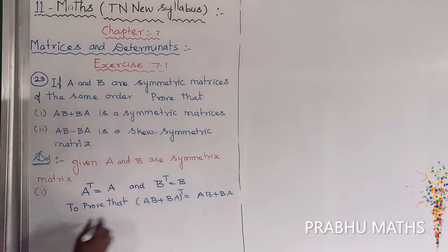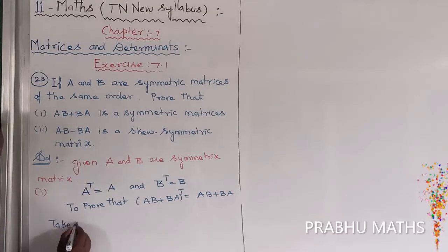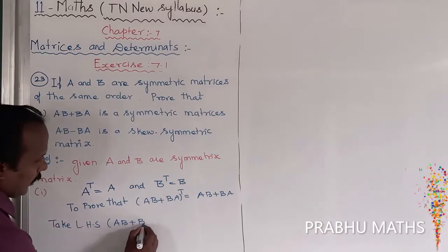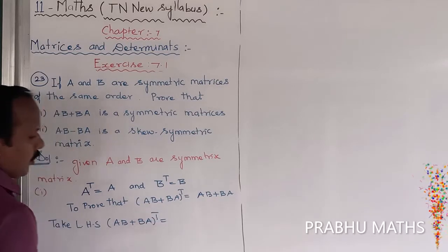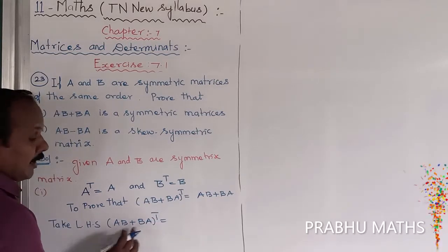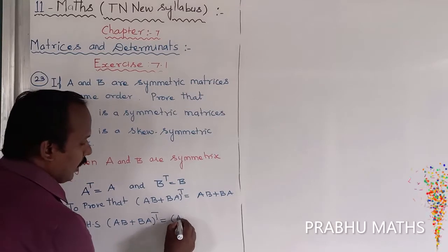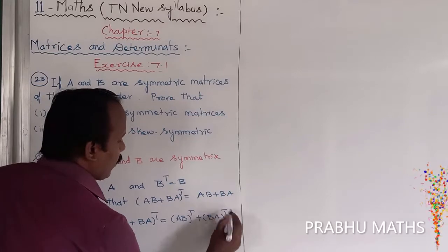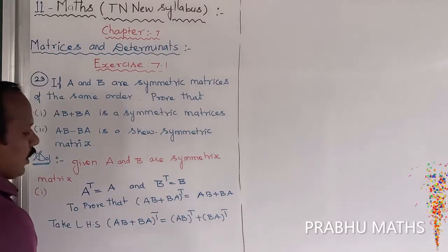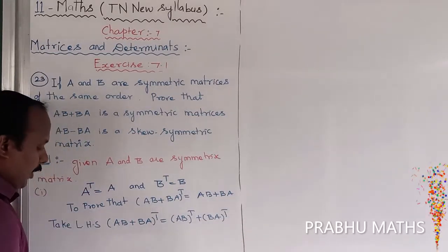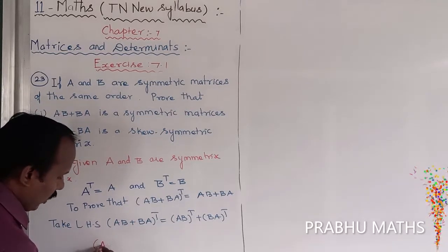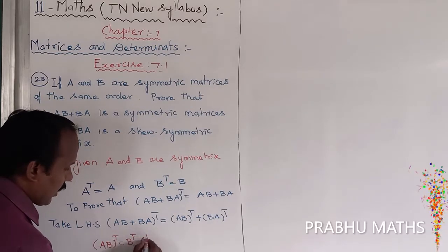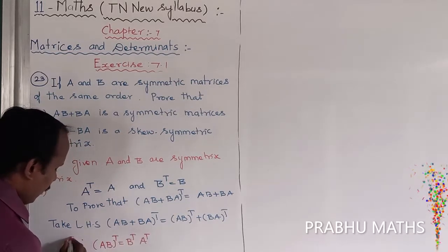Let us take the left hand side. LHS: AB plus BA, the whole transpose. This can be split as AB the whole transpose plus BA the whole transpose. The rule applied here is that AB the whole transpose equals B transpose times A transpose.